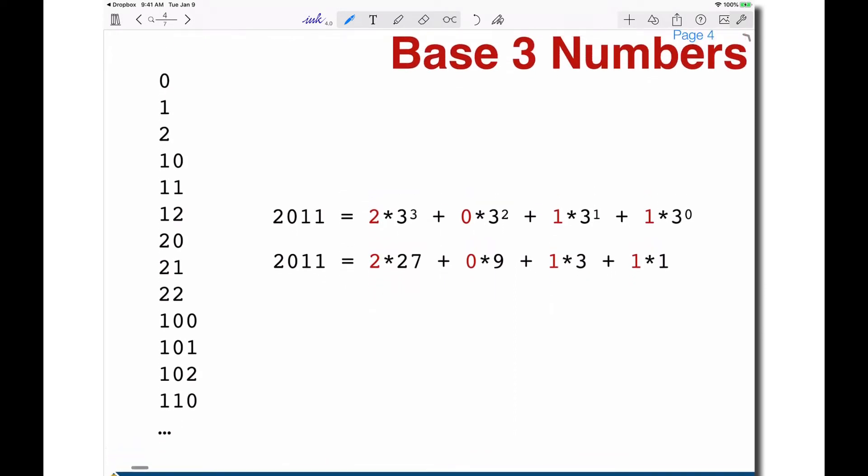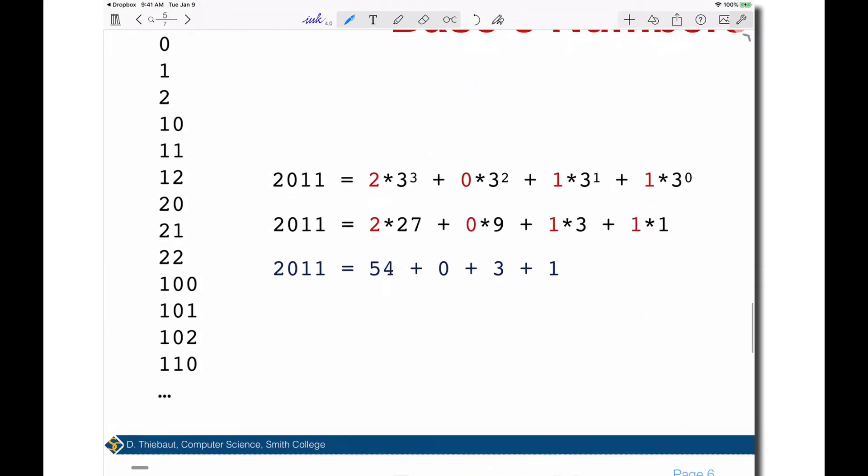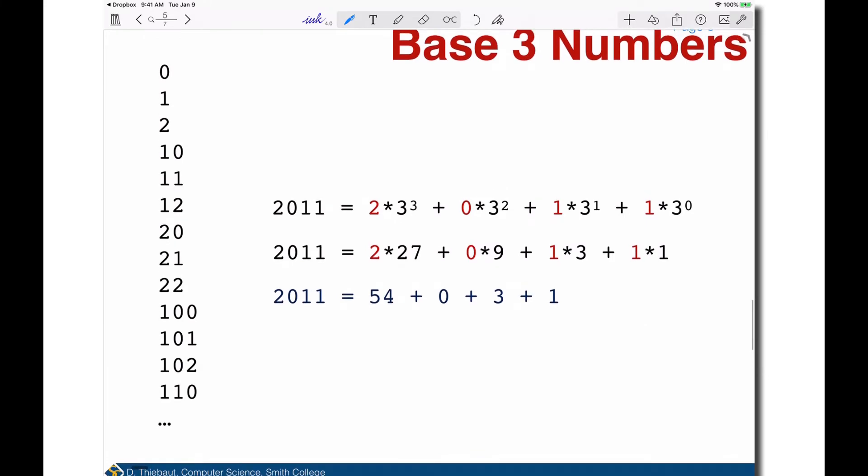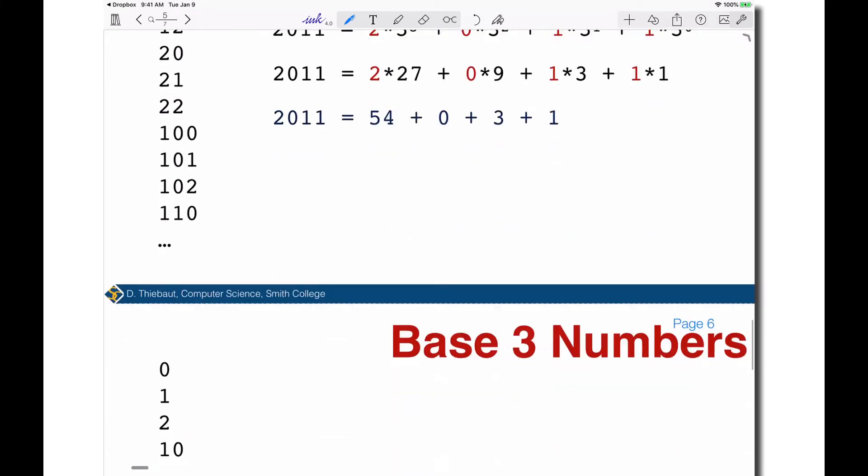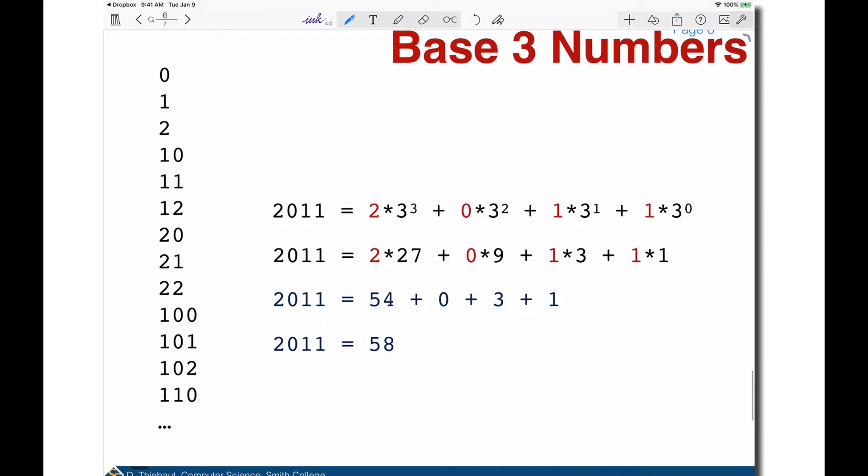3³ is 27, 3² is 9, and 3¹ is 3. So that's 2×27 + 0×9 + 1×3 + 1×1, which equals 54 + 0 + 3 + 1 = 58. Now I can go from a number in base 3 to a number in base 10.